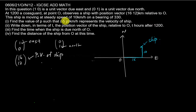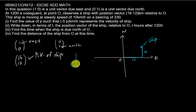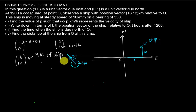The ship is moving at a steady speed of 10 km per hour on a bearing of 330. Bearing 330 is 360 minus 30, so it's 30 degrees west of north — moving in that direction at 10 km per hour.